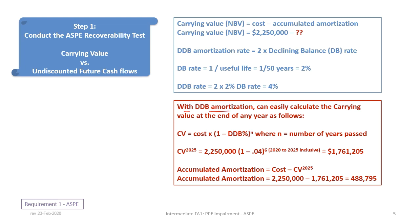With double declining balance amortization, the carrying value at the end of any year can be calculated as: Carrying Value = Cost × (1 − DDB rate)^n, where n is the number of years elapsed. For the carrying value in 2020, we take $2,250,000 × (1 − 0.04)^6 = $2,250,000 × (0.96)^6 = $1,761,205. The accumulated depreciation is then Cost − Carrying Value = $2,250,000 − $1,761,205 = $488,795.